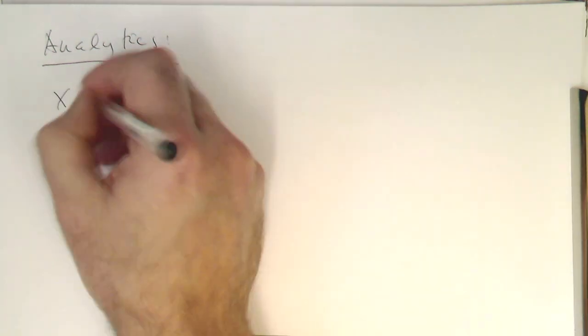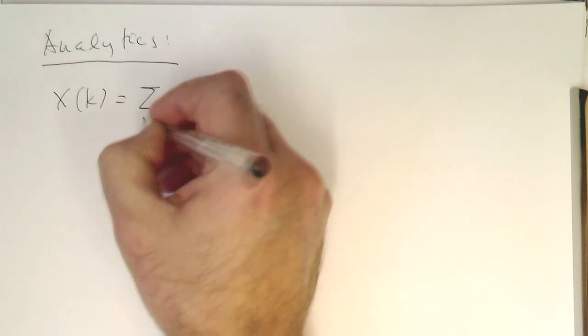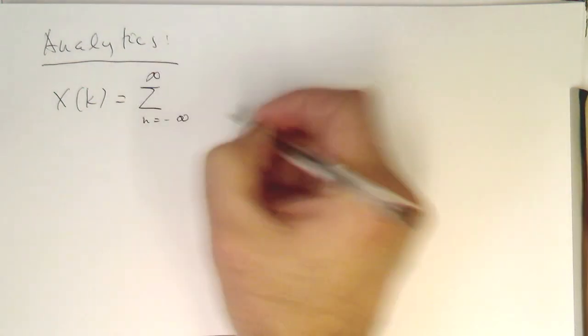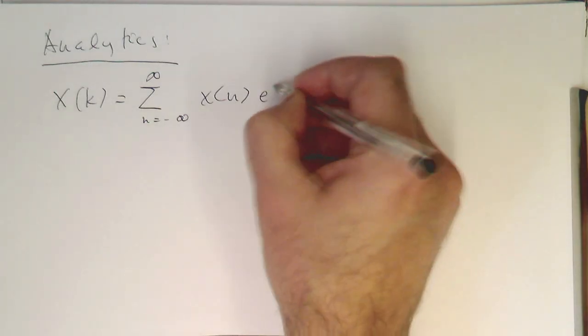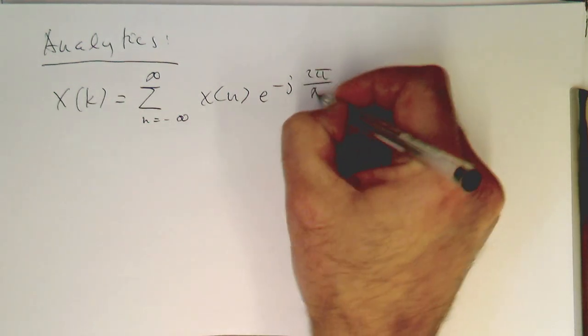Let's do now the analytics of this. So how do we see that? So let's write down our Fourier transform, our discrete Fourier transform again here. So that's n equals from minus infinity to plus infinity, x of n, and then e to the minus j 2 pi over n, k n.